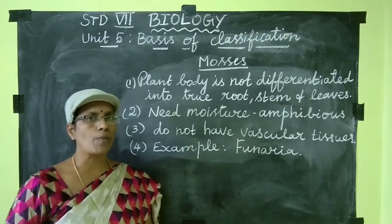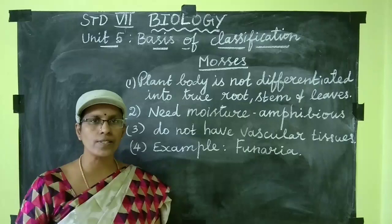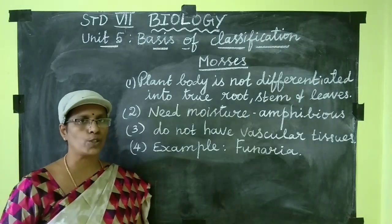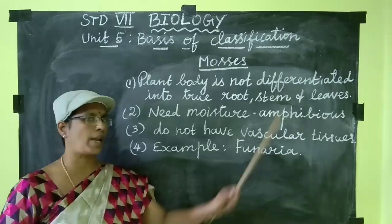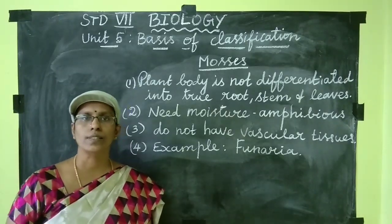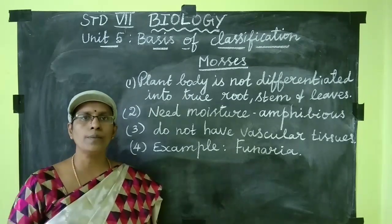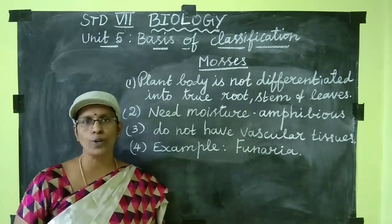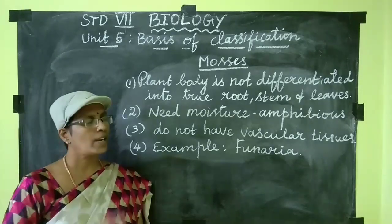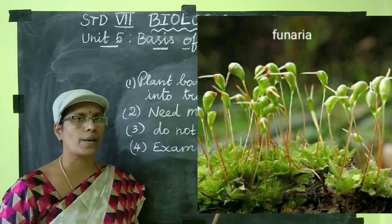The next group of plants is mosses. In mosses, the plant body is not differentiated into true root, stem, and leaves, though they have some root, stem, and leaf-like structures. They are water-loving plants that need moisture to complete their life cycle, so they are referred to as amphibious plants. In mosses, the specialized conducting tissues — vascular tissues — are absent. Xylem and phloem are the vascular tissues; xylem transports water and minerals, phloem transports food. These are absent in mosses. Example: Funaria.